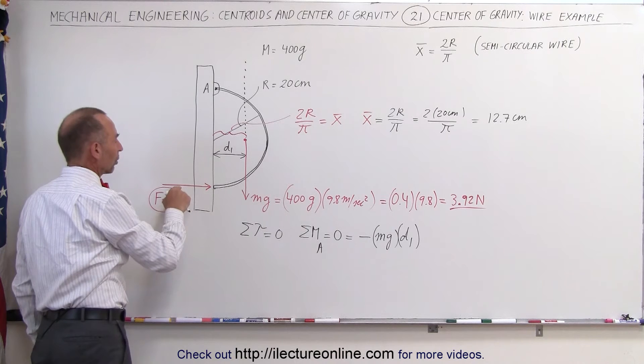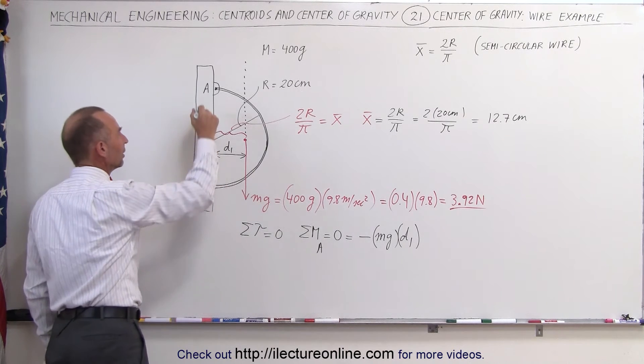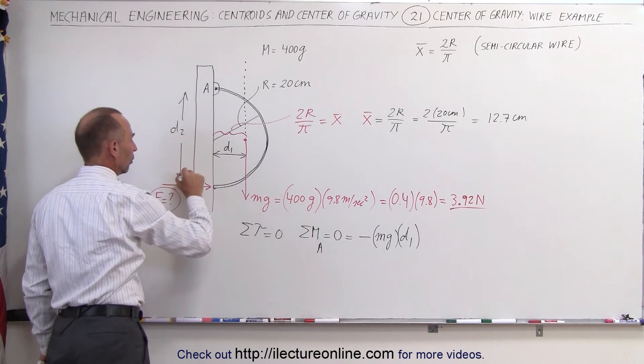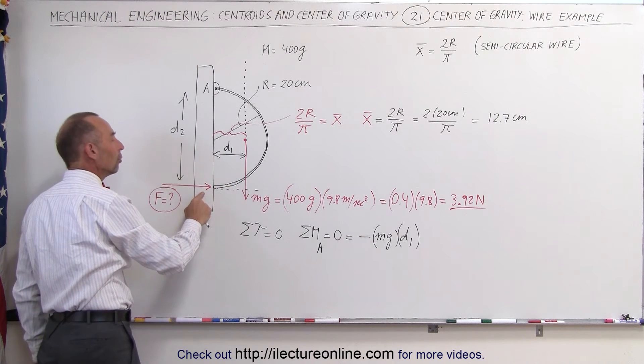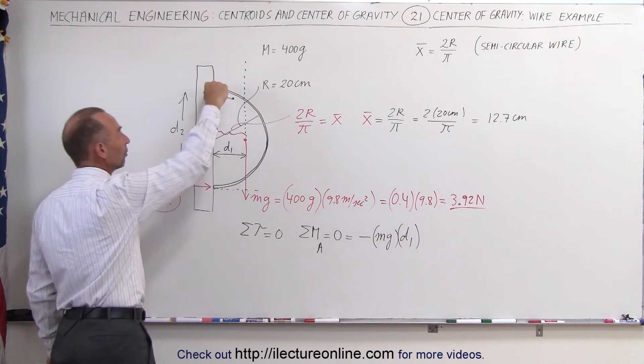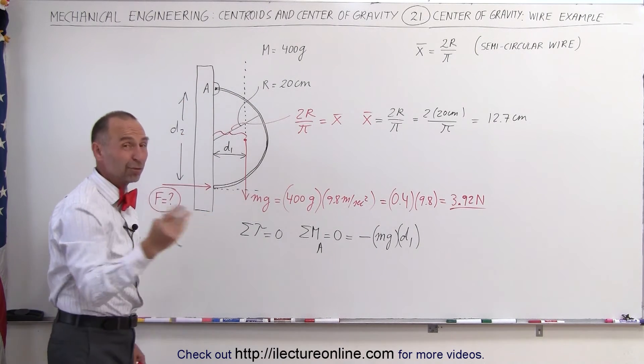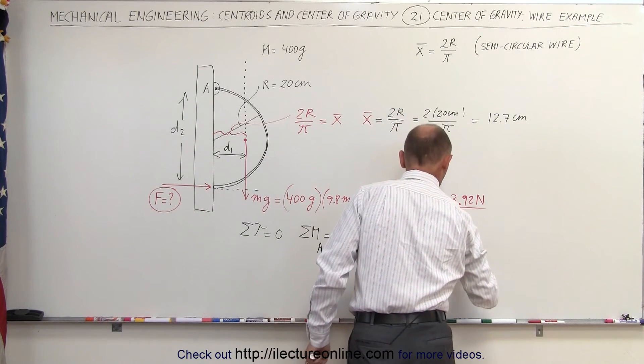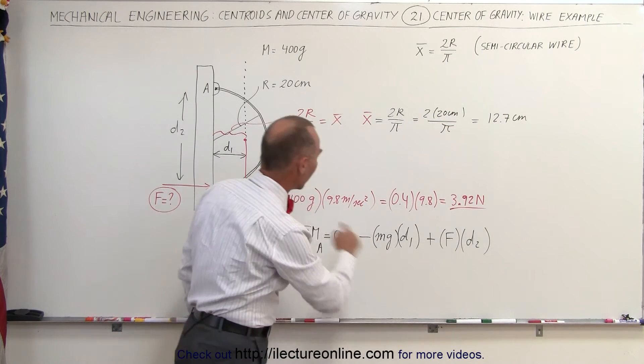The second force causing a torque or causing a moment would be this force right here, the reactionary force of the post pushing back against the wire. That makes this here distance 2. Notice that this is the line of action of that force. So to get the moment, we multiply the force times the perpendicular distance from the line of action of force to the point of rotation. This will cause a counterclockwise moment. Counterclockwise means positive, so plus the force F multiplied times d2. And that all adds up to 0.